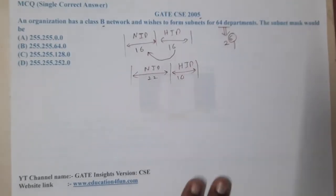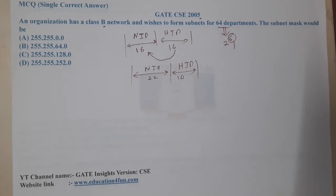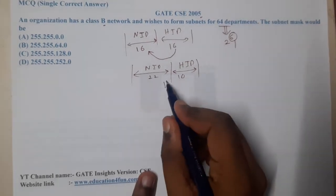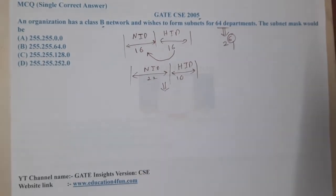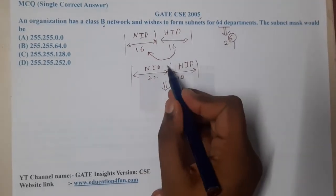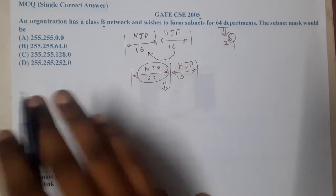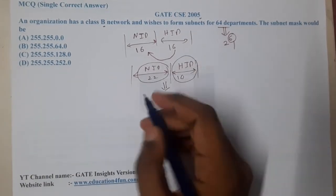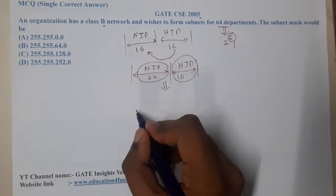Now they are asking the subnet mask. So what is a subnet mask? Subnet mask is nothing but the network ID, everyone will be one, and the host ID, everyone will be zero. So basically 22 ones in a row.